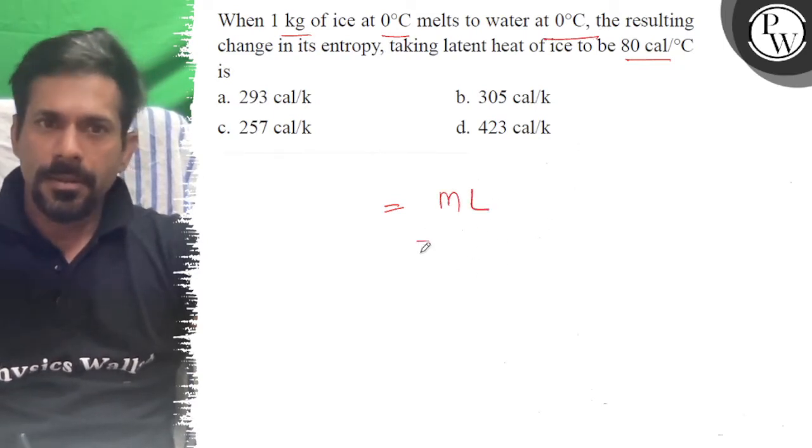So this becomes m into L. So m is 1 kg into 80, and that will be equal to 80 calorie.